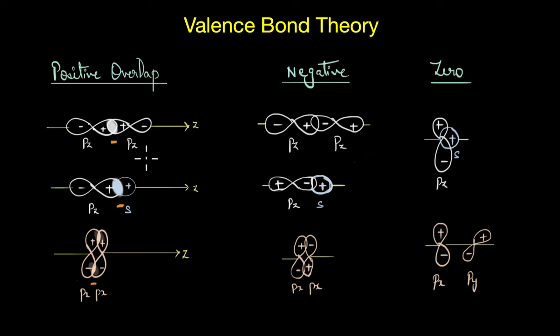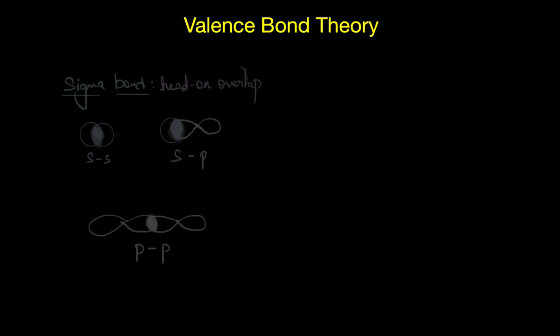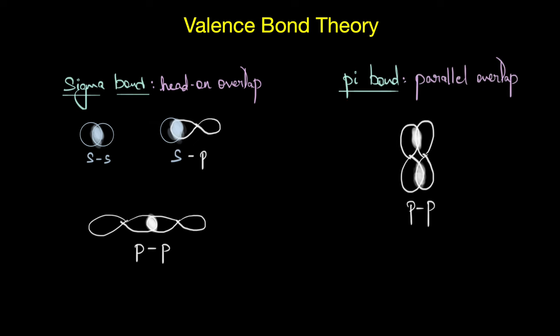Based on the overlapping of different types of orbitals, we get different types of bonds. Head-on overlap, or axial overlap of orbitals, would give us a sigma bond. As you can see here, the s-s, s-p, and the p-p orbitals are all overlapping axially, or they are having a head-on overlap here.